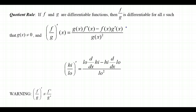That's a complex formula, so here's a mnemonic from my high school teacher: think of f as the 'high' function (on top) and g as the 'low' function (on the bottom). The mnemonic is: low D high minus high D low over low squared. Say it a few times and you'll have it memorized.